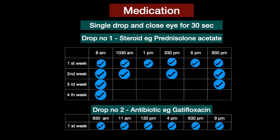There is a table with time slots that can be used to guide drop application. Over a period of four weeks, drop number one, the steroid, is applied six times a day in the first week, four times a day in the second week, two times a day in the third week, and one time a day in the fourth week.